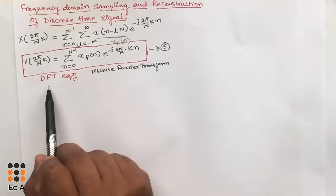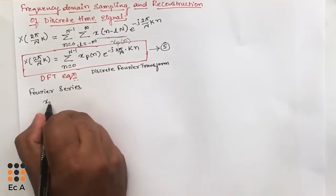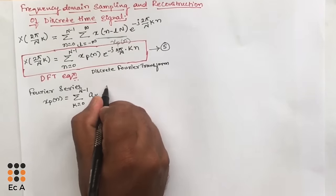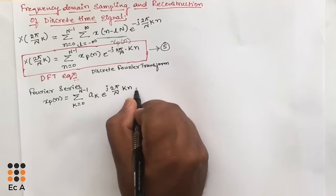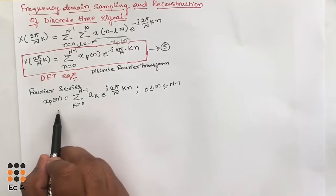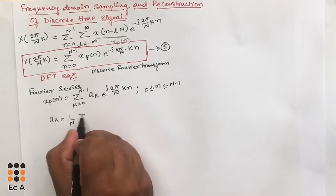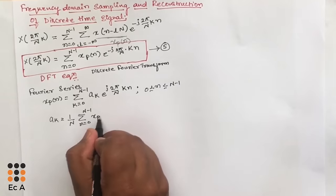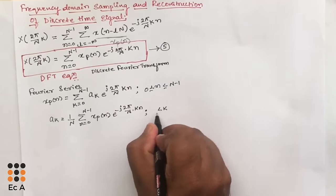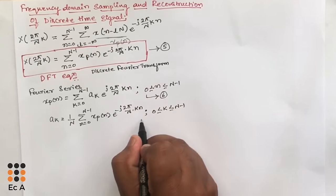Using Fourier series, any periodic signal can be represented as xp of n equals summation from k equals 0 to N minus 1 of ak times e to the power of j 2 pi by N times k n, for n ranging from 0 to N minus 1. Here ak equals 1 by N summation from n equals 0 to N minus 1 of xp of n times e to the power of minus j 2 pi by N into k n, for k ranging from 0 to N minus 1. Call the first equation number 6 and the second equation number 7, where ak is the Fourier coefficient.